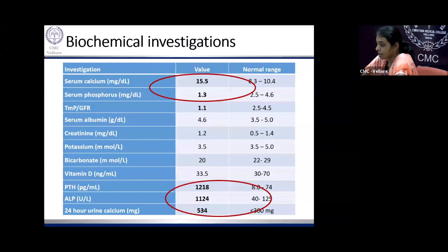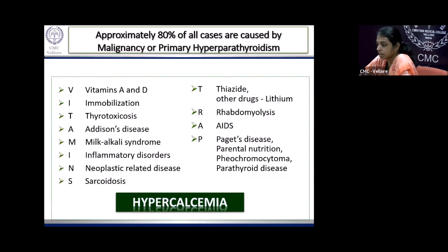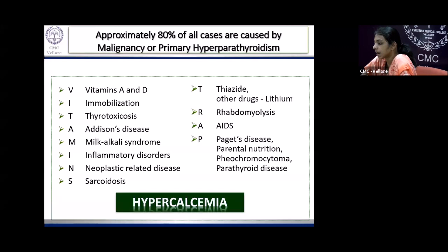This gentleman had primary hyperparathyroidism. When patients present with hypercalcemia, most cases are due to malignancy or primary hyperparathyroidism, but it is essential to rule out other causes using the acronym VITAMINS TRAP: V for vitamin A and D toxicity, I for immobilization, thyrotoxicosis, Addison's, milk-alkali syndrome, inflammatory disorders, neoplastic-related, S for sarcoidosis. TRAP: T for thyrotoxicosis, lithium, rhabdomyolysis, AIDS, P for Paget's disease, parenteral nutrition, pheochromocytoma, and diseases of the parathyroid including primary hyperparathyroidism.